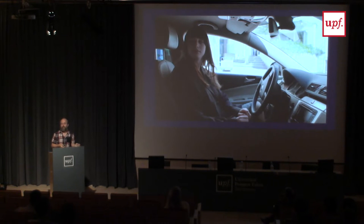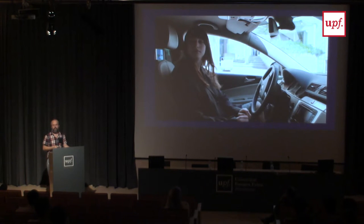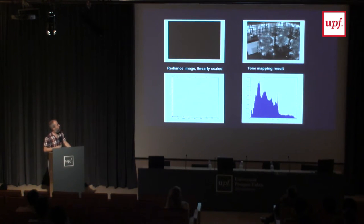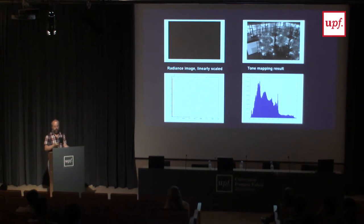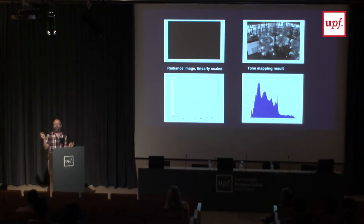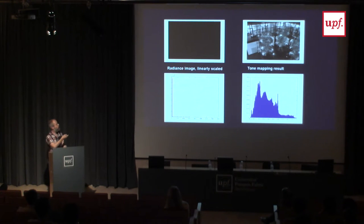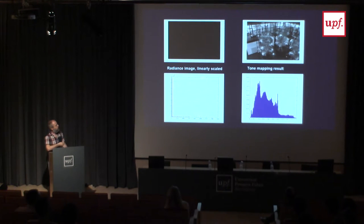In cinema, you keep the logarithmically-encoded footage and undo the logarithmic encoding in post-production. A skilled colorist does a grading process by which they adjust the contrast and also the color so that the background, for instance, is no longer overexposed. This is manual tone mapping, and it's what's going on in post-production — it's done manually, not by algorithms. If you do not do tone mapping right and show the footage linearly, you don't see anything because the histogram is very much skewed to the low values.